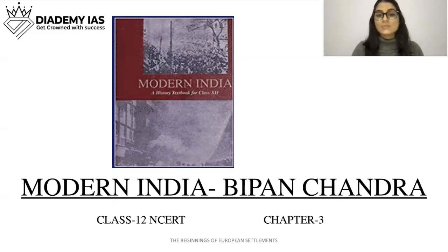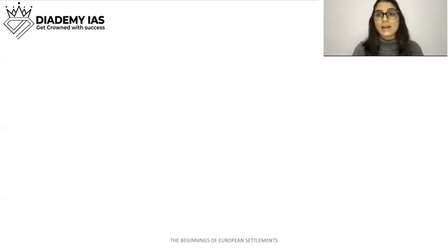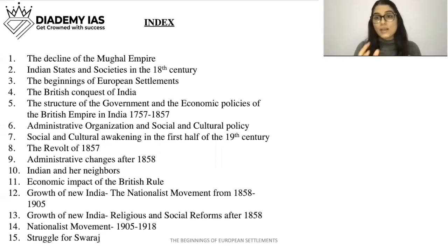Hello everyone, this class is presented by Drishti IAS. We will continue with Chapter 3 of Class 12 NCERT Modern India by Bipin Chandra. We had started Chapter 3 in the previous class and covered the Portuguese. We learned that many European powers came to India — Portuguese, Dutch, British, and French. We covered how Portuguese found a new trade route from Europe to India and established many trading centers in India.